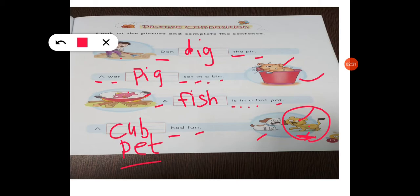So students, now let's read the sentences. Don dig the pit. Next one. A wet pig sat in a bin. Next one. A fish is in a hot pot. Next one. A cub had fun. Or a pet had fun.